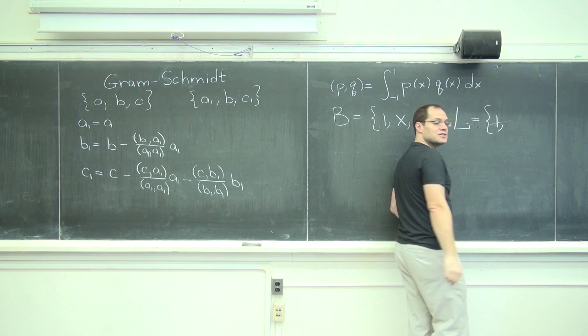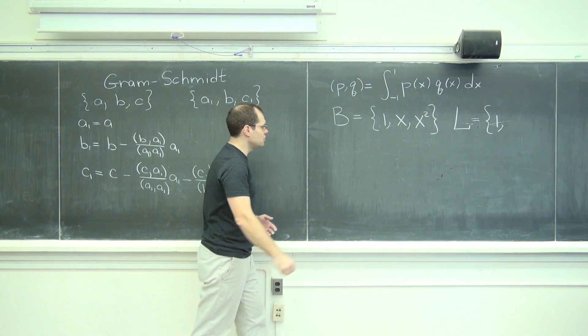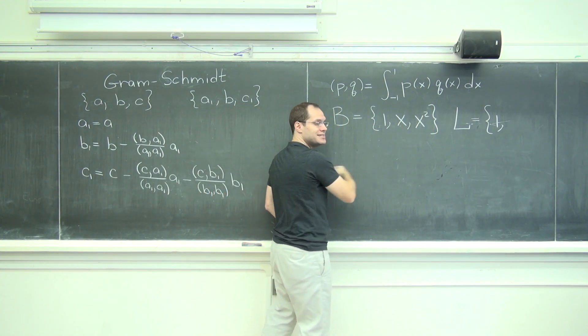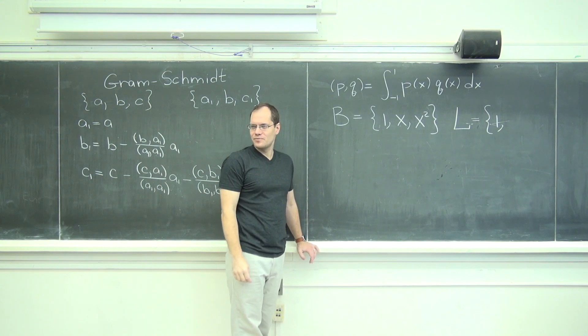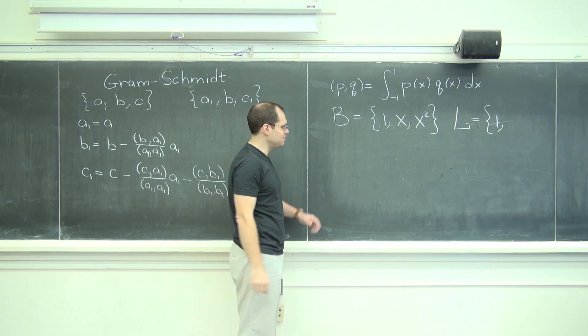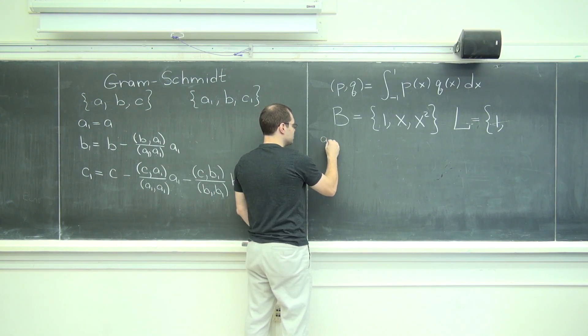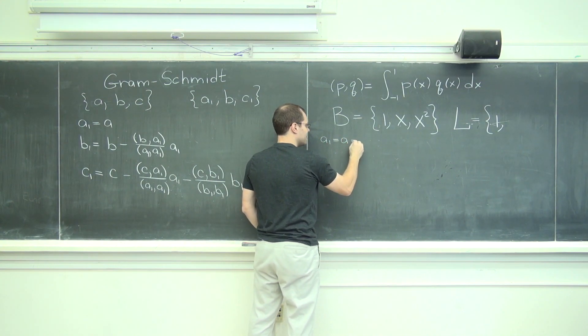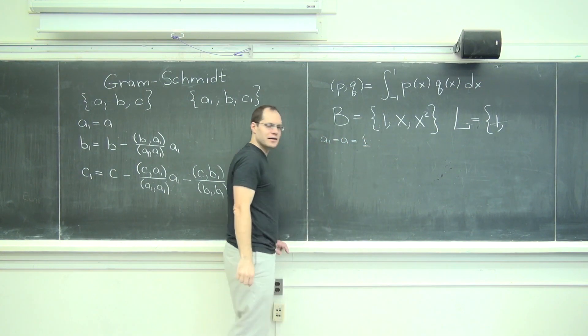Well, we know this is one, right? Because the first one's unchanged. So I'll call them ABC just to follow that pattern. Although P1, P2, P3 would be better, but let's stick with ABC. And so A1 is the same as A, and so it's 1.